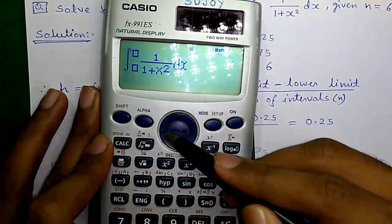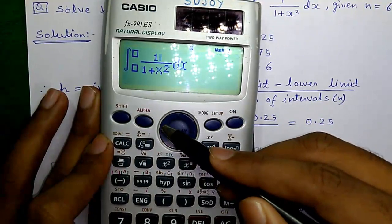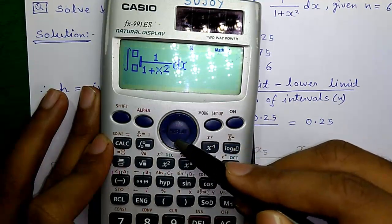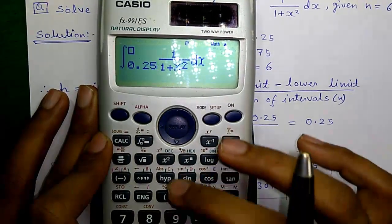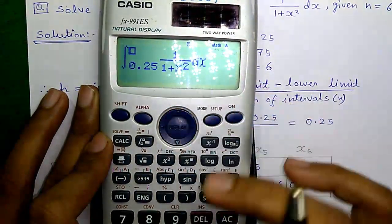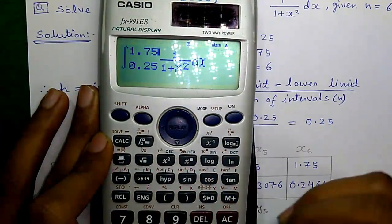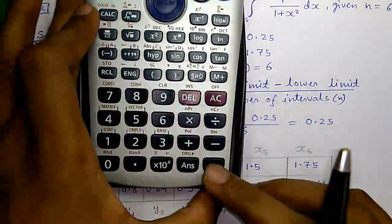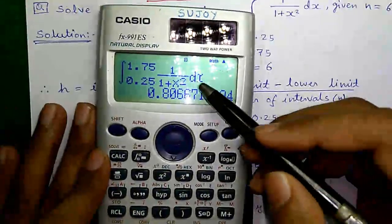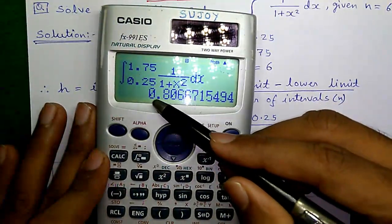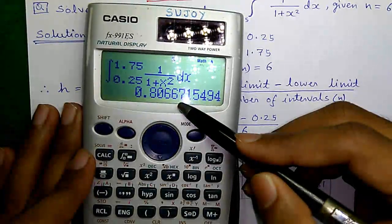So, 1 divided by 1 plus x squared, scroll to the left, scroll down, enter lower limit 0.25, scroll up, enter upper limit 1.75 and press the equals to button. So, it will give you the integration answer that is 0.8066, isn't it cool?